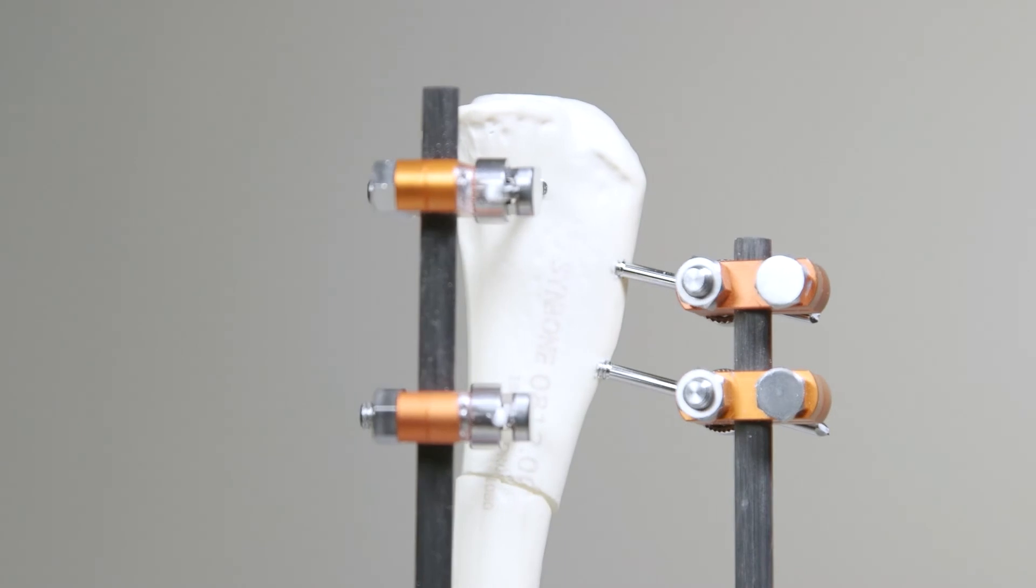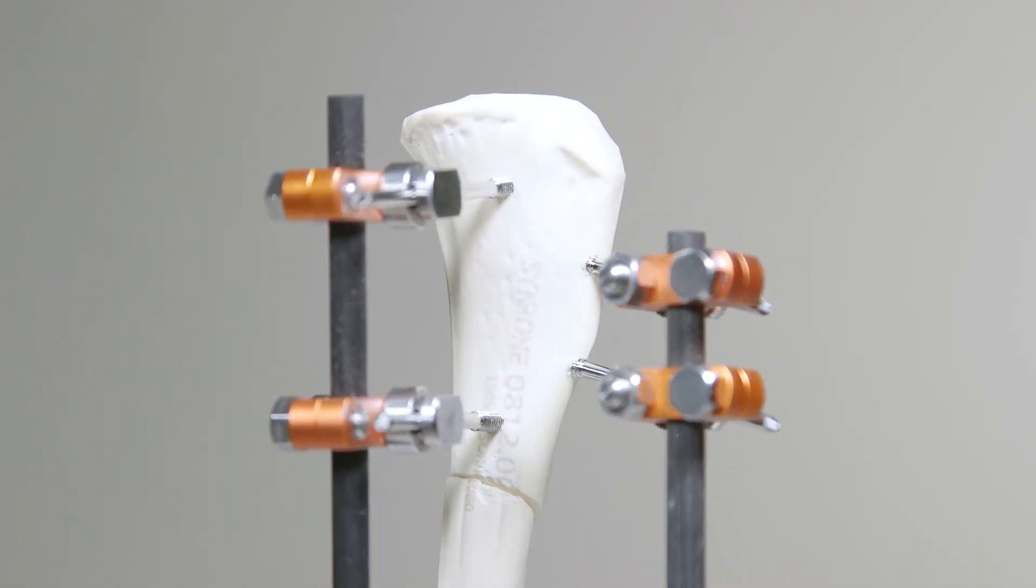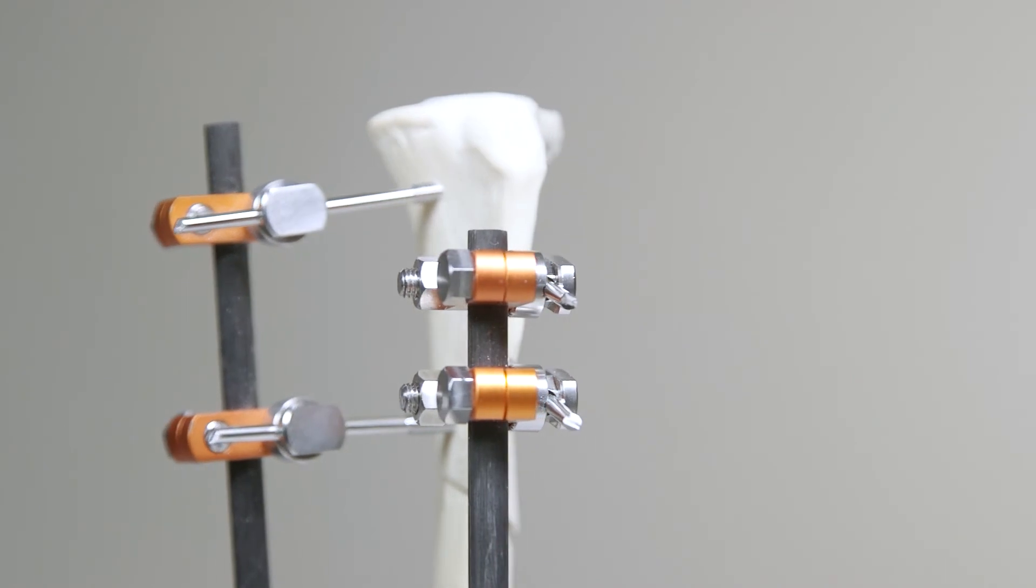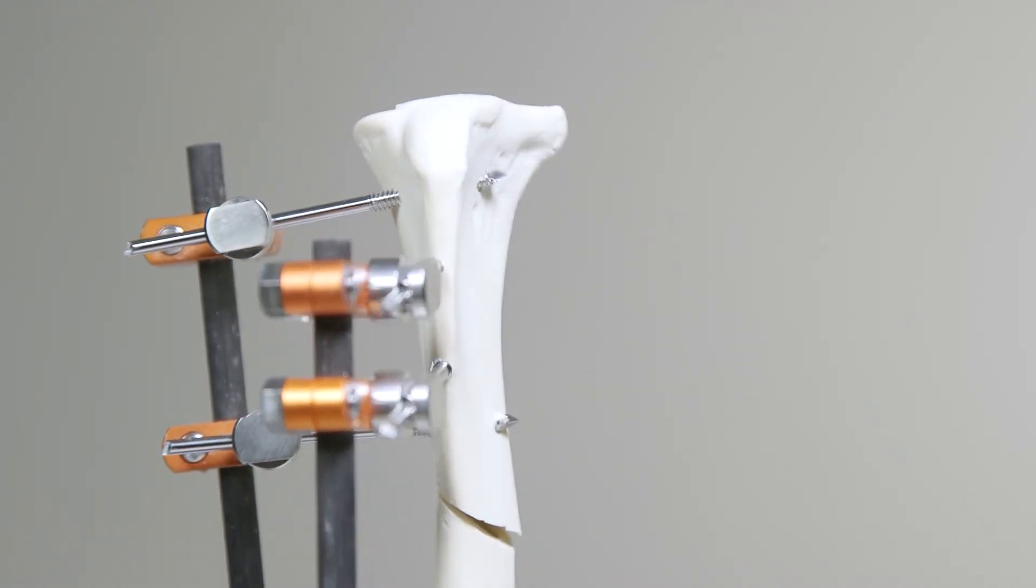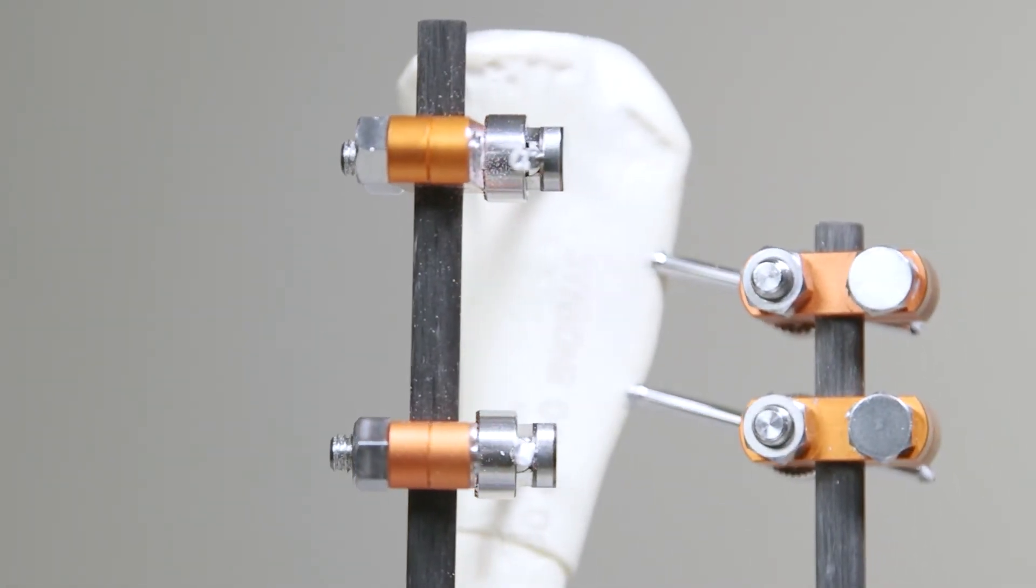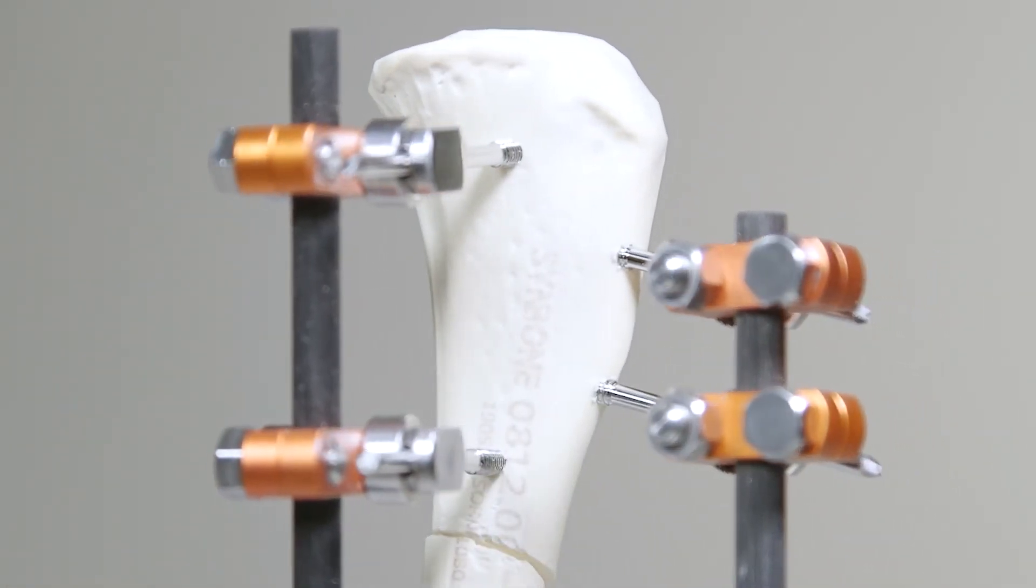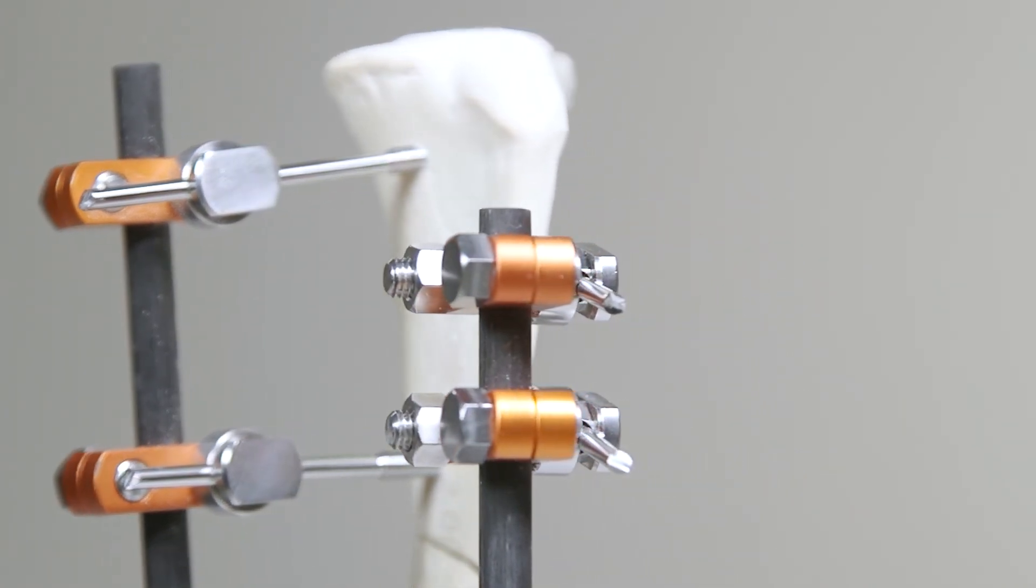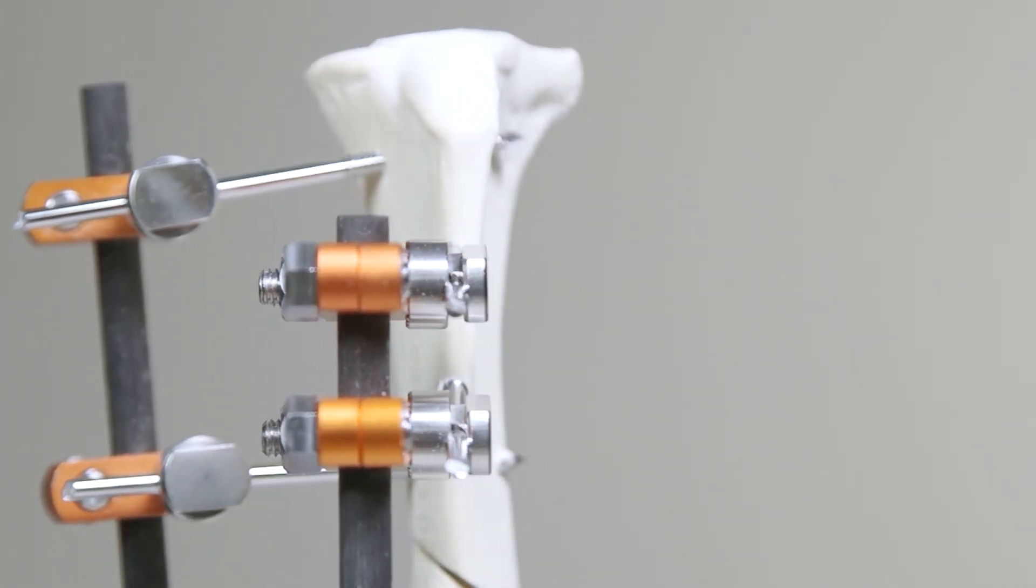Choice of threaded pin depends on surgeon preference and on the clinical case, but what's important is the size of the pin in relation to the bone. As a general rule for external fixation, a surgeon should choose a pin with a threaded section that is approximately 25% of the diameter of the bone at the point of insertion.